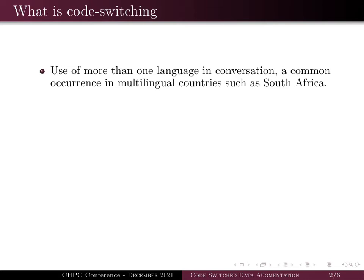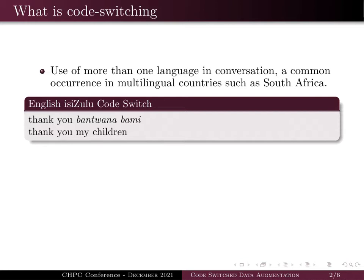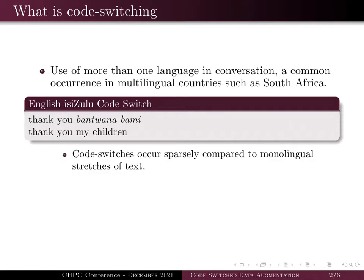Firstly, what is code switching? Code switching is the use of more than one language within or between sentences, and this is a common occurrence in multilingual countries such as South Africa. Here's an example of an English IsiZulu code switch with the translated version in the second row. Code switches are difficult to model because they occur sparsely compared to monolingual stretches of text, so we have much less data to model the phenomenon from.